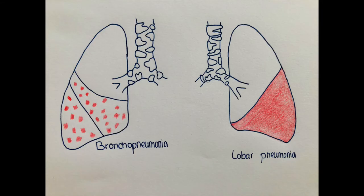As you can see on the poster, bronchopneumonia is affecting several different spots or loci within usually both lungs and extends over several lobes. Lobar pneumonia, as the name indicates, is only affecting one lobe, but then the entire area of that one lobe.